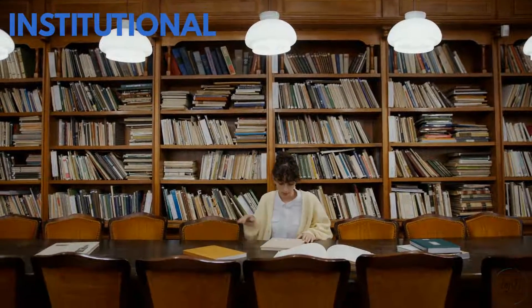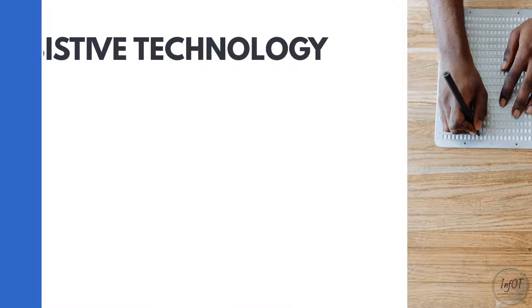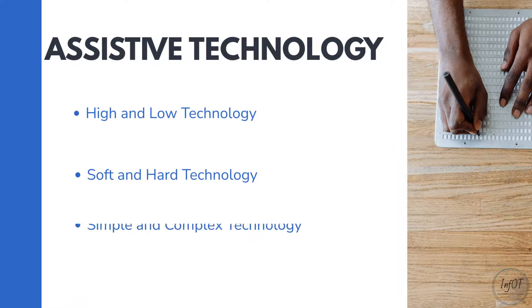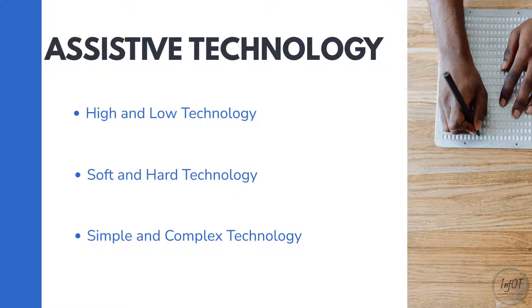The fourth domain is Assistive Technology. According to the model, Assistive Technology can be divided into multiple categories. Some examples include high and low technology, soft and hard technology, and simple and complex technology.